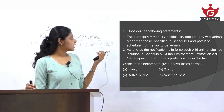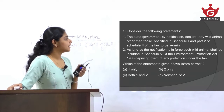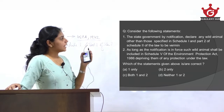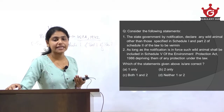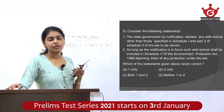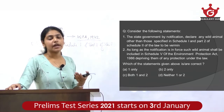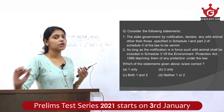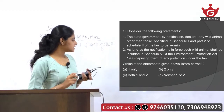Looking at Statement 1 again: it says the state government by notification declares any wild animal, other than those specified in Schedule 1 and Part 2 of Schedule 2, to be vermin. However, as per the provisions of the law, it is not the state government but the central government which declares such wild animals to be vermin under Schedule 5. Therefore, Statement 1 is wrong — because it says 'state government' instead of 'central government'.